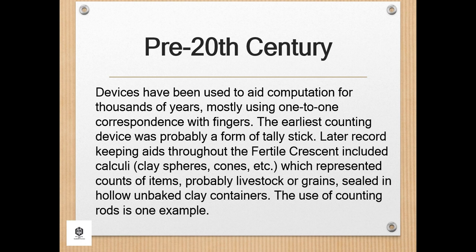The abacus was initially used for arithmetic tasks. The Roman abacus was developed from devices used in Babylonia as early as 2400 BC. Since then, many other forms of recording boards or tables have been invented. In a medieval European counting house, a checkered cloth would be placed on a table, and markers moved around on it according to certain rules as an aid to calculating sums of money.